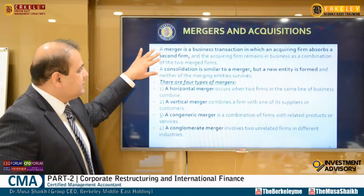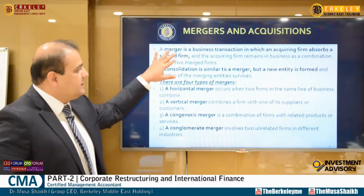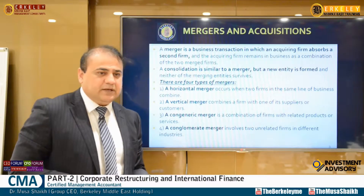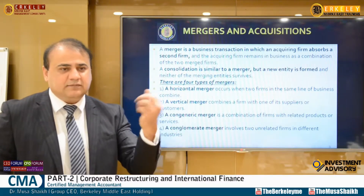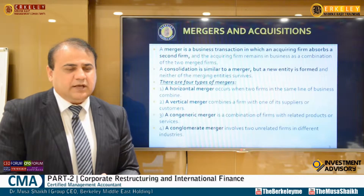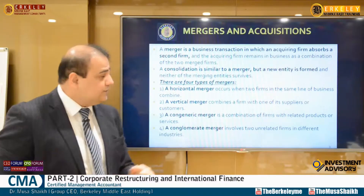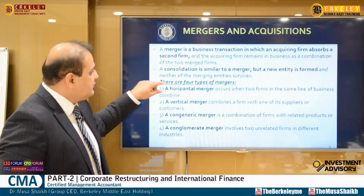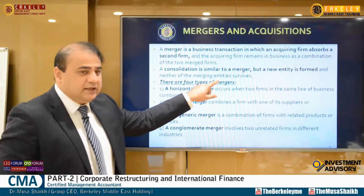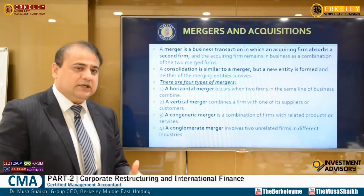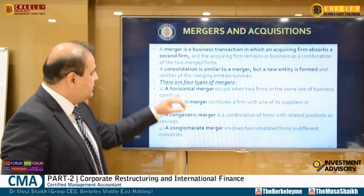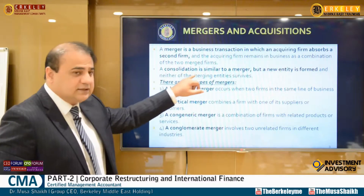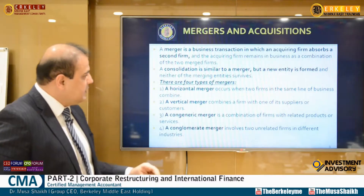A merger is a transaction in which an acquiring firm absorbs a second firm. Large companies like Nestlé often acquire smaller companies and merge them in — they become a unit. A consolidation is similar to a merger, but a new entity is formed and neither of the merging entities survives — both entities close and a new entity is created. This kind of combination is called a consolidation.